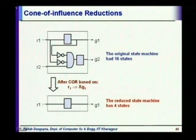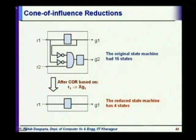The first reduction people do in a model checking tool is cone of influence reduction. For the original circuit, suppose we want to prove the property: always (R1 implies next G1). We examine each signal to see if it is in the cone of influence of the signals R1 and G1 appearing in the property.